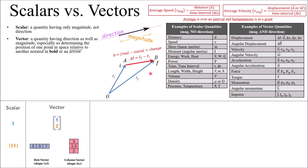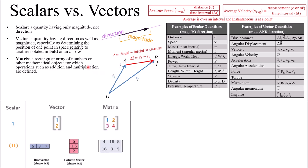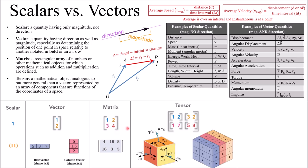Moving on to the idea of a matrix — it's pretty similar to a vector but is kind of an extension of it. We can build up to the idea of a tensor, which is outside the scope of what we want to learn about, but a tensor is analogous to a vector — just more generalized.